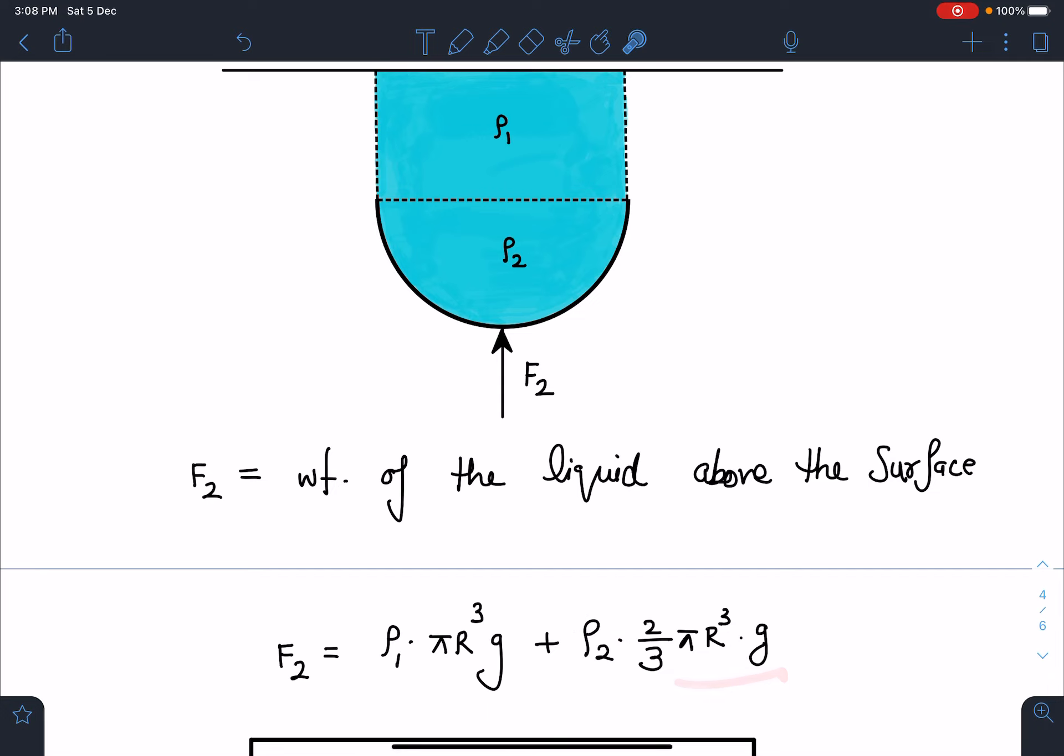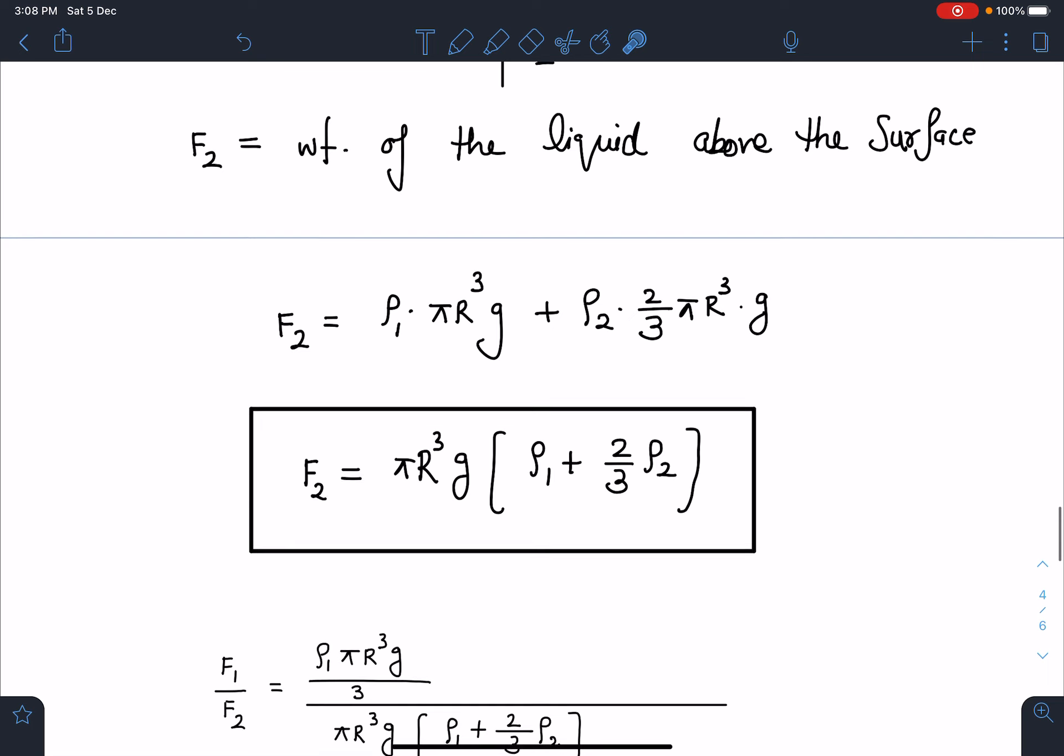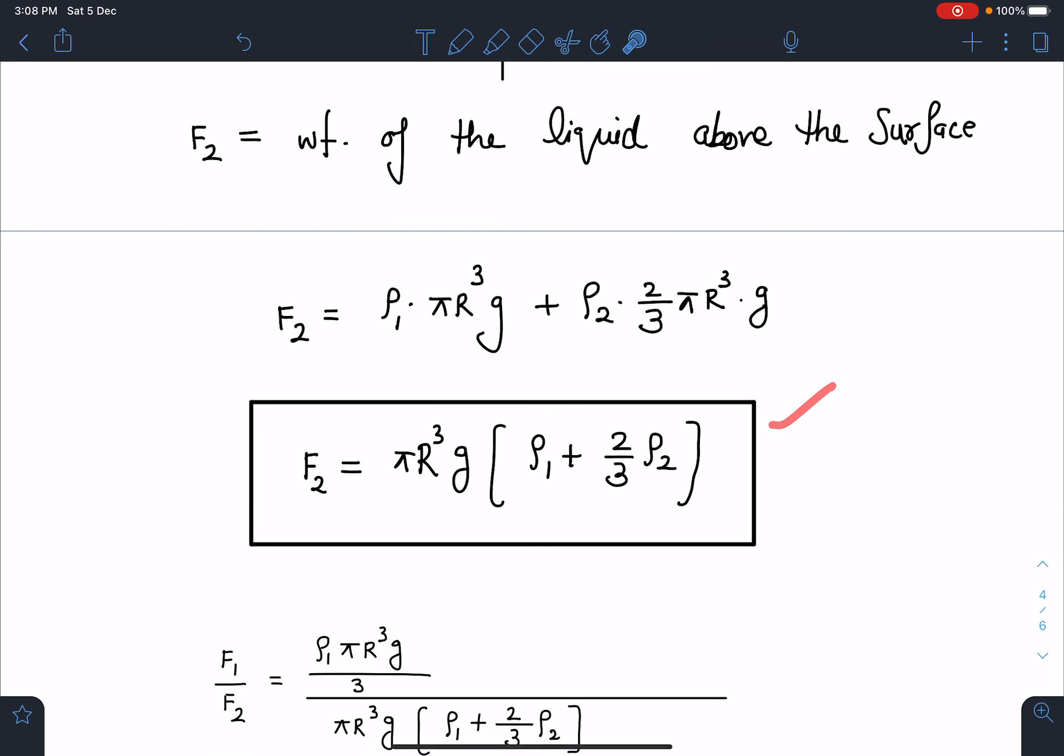If I simplify I am going to get this F2 as pi r cube G times rho 1 plus 2 by 3 rho 2.